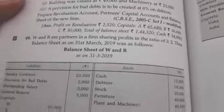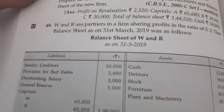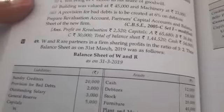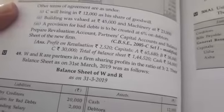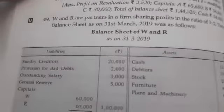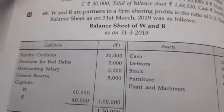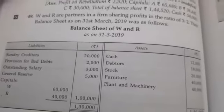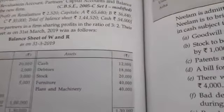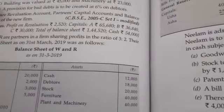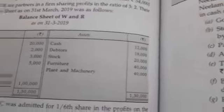On the liability side: creditors are given 20,000; provision for bad debts is given 2,000 — instead of subtracting it from the debtors, it has been shown on the liability side. This is also a way of presenting provision for bad and doubtful debts. Outstanding pending salary is 3,000; general reserve is 5,000; capital of W is 60,000, R is 40,000 — total capital 1,00,000. Total of the liability side is 1,30,000. On the asset side: cash is 12,000; debtors are 18,000; stock is 20,000; furniture is 40,000; plant and machinery is 40,000 — total is 1,30,000.